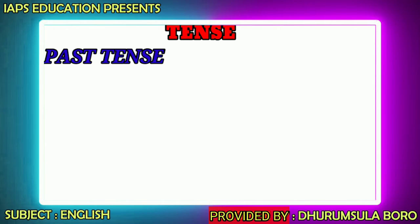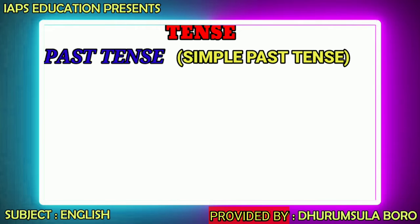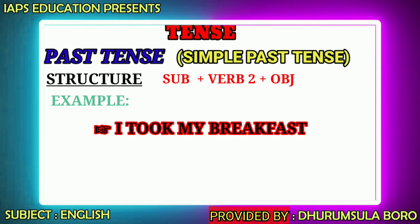In the simple past tense, we use the past form of the verb, that is Verb 2. The structure of simple past tense is: Subject + Verb 2 + Object. For example: 'I took my breakfast.' Here, 'I' is the subject, 'took' is the verb (Verb 2), and 'my breakfast' is the object.